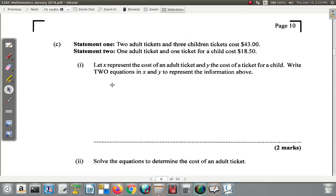Question 2C of the CSEC January 2018 paper. It says here you have two statements. Statement 1: Two adult tickets and three children tickets cost $43. Statement 2: One adult ticket and one child ticket cost $18.50.